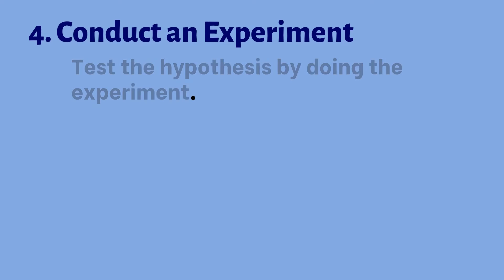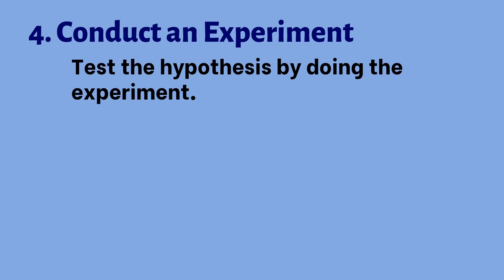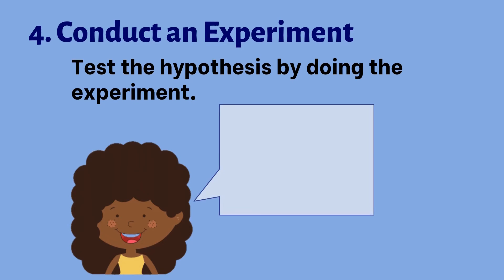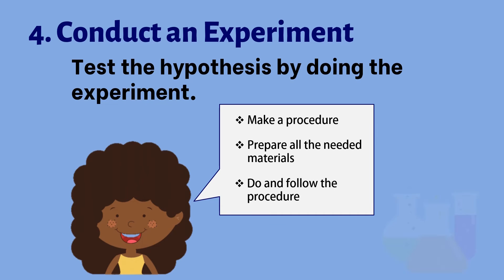The fourth step is conducting an experiment. The scientists test the hypothesis by doing the experiment. In this step, Betty makes a procedure for her experiment, prepares the needed materials, and then proceeds to the experiment by following the procedure she has made.